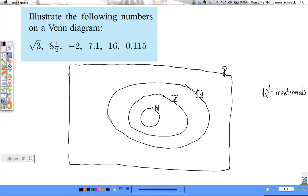So, where are these numbers going to fit? Where is the best spot for them to go? Square root of 3, that is an irrational number. That's going to have to go floating outside here. 8 and a half. Is that a natural number? No. Is it an integer? No. Is it a rational number? Yes. Negative 2. That's going to be in the integers. Not a natural number, but it is an integer. 16. It goes in here. It's a natural number. 7.1. That is a rational number. 7.1 could be written as a fraction. As can 0.115. So, here are these numbers on the Venn diagram, and it's important to note how these sets are subsets of each other.